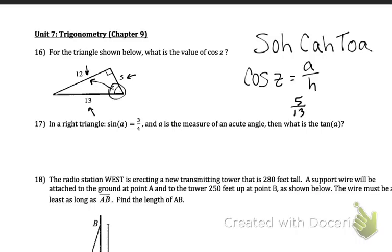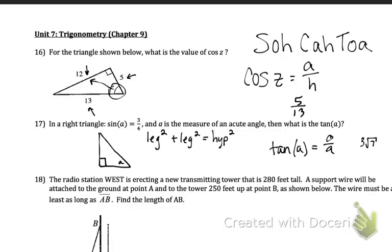Problem 17. In a right triangle, sine of A equals 3 over 4. A is the measure of the acute angle. What is tangent of A? The first thing you're going to need to do is draw a triangle and label your parts. It doesn't matter where we put angle A. I'm going to put it right here. Sine is opposite over hypotenuse. So label your opposite side as 3, and your hypotenuse as 4. After that, to do tangent, we're going to need to know our adjacent. So you're going to have to do Pythagorean theorem. Pythagorean theorem is leg squared plus leg squared equals hypotenuse squared. Once you solve that for your adjacent side, you can write down that tangent of A is your opposite over adjacent, whatever that happens to be. In this problem, your final answer is going to be 3 square root 7 over 7.